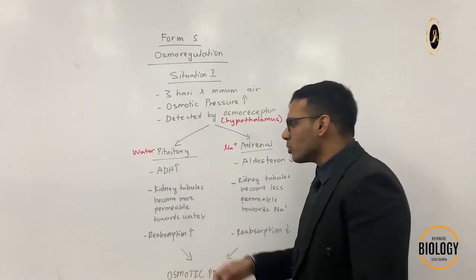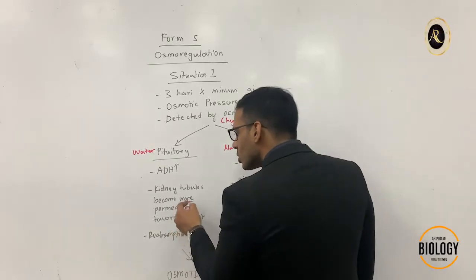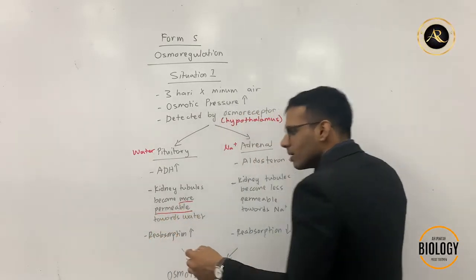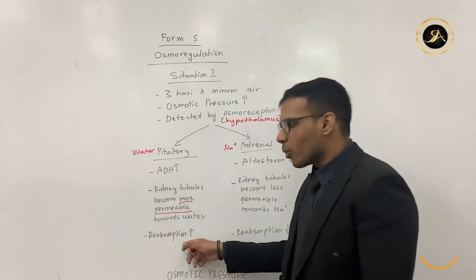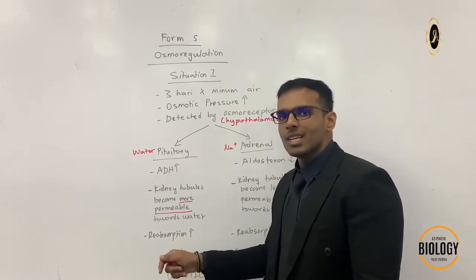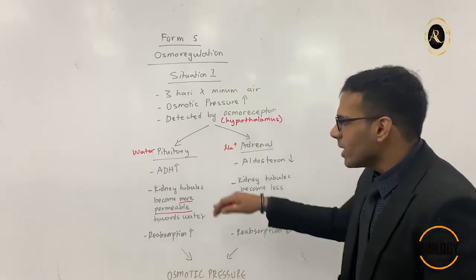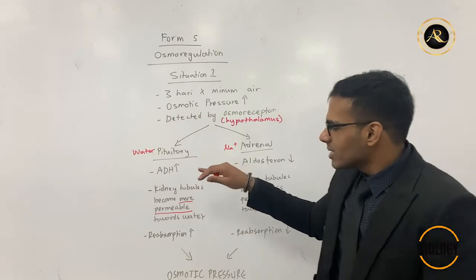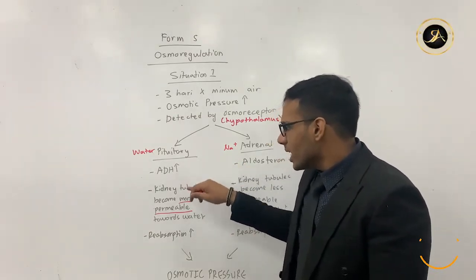If the level of anti-diuretic hormone increases, kidney tubules will become more permeable towards water, meaning the reabsorption of water back into your body will increase.